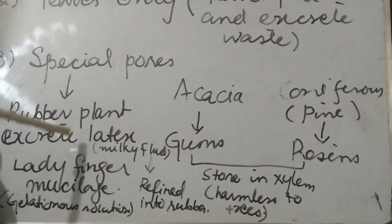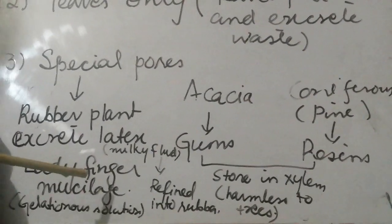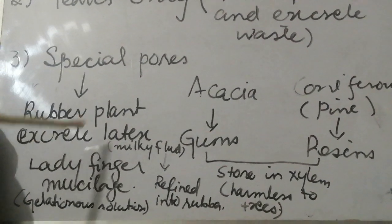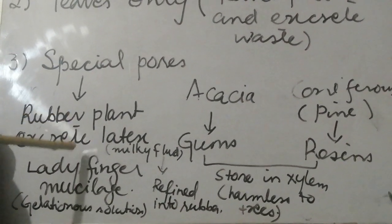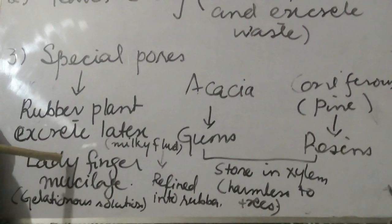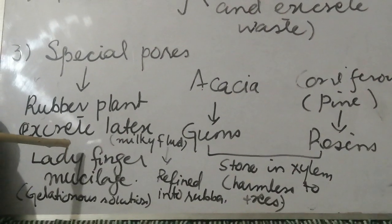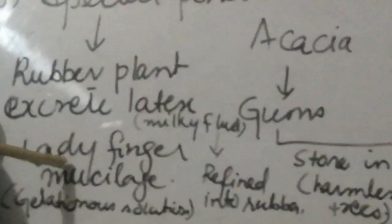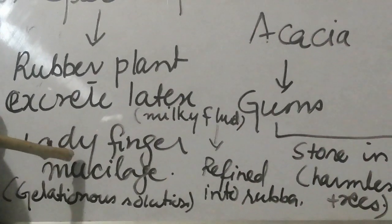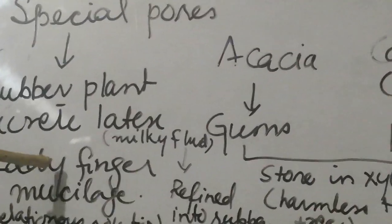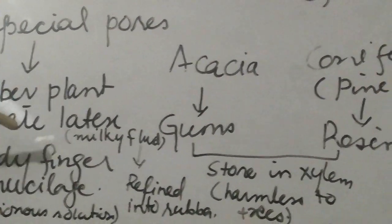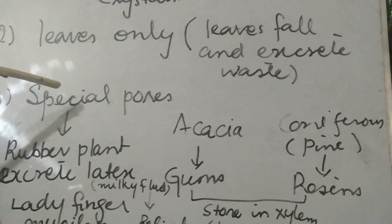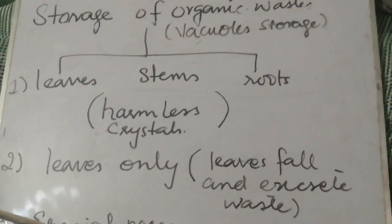The fourth is mucilage. Mucilage is a gelatinous solution, mainly polysaccharide in nature, and it is produced by lady fingers. It acts as a laxative and is given to patients with constipation. That is all about today's lecture. If you have any confusion or problems, you are free to ask.